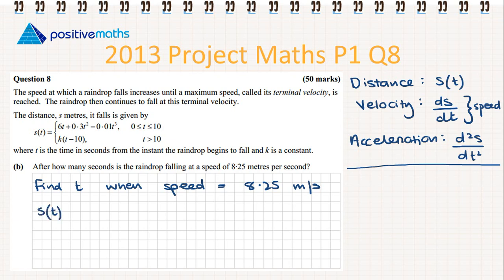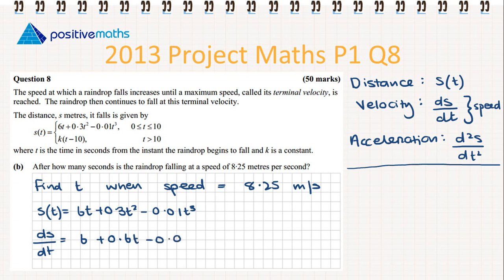We are going to write out the formula for distance again. Now we need to find ds/dt, which is equal to 6 + 0.6t − 0.03t². So now we have our formula for speed: speed = 6 + 0.6t − 0.03t². We need to find t when this formula equals 8.25.